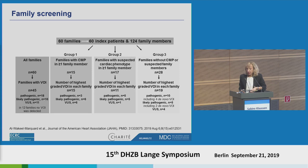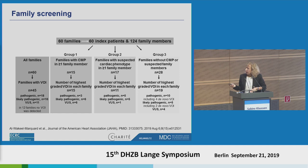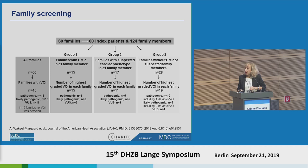With the family screening, we got 60 index patients and 124 family members. We created three groups: Group one included families with at least one more affected family member apart from the index patient; Group two included family members with suspected cardiomyopathy; Group three had only the index patient with no other affected or suspected family member. For the genetic analysis, we found a genetic variant of interest in 45 of these 60 families, and in 12 families we could not detect any genetic variant. Interestingly, in families with probable familial cardiomyopathy, every one of them had a genetic variant of interest.